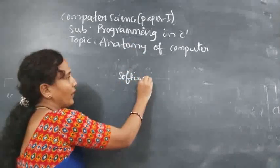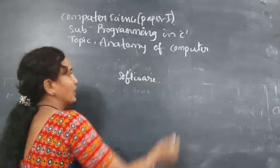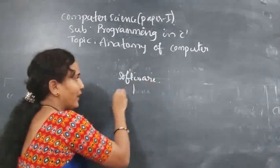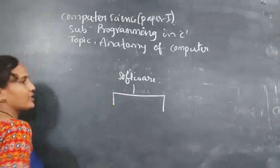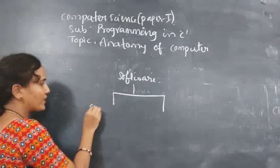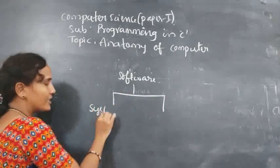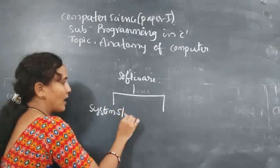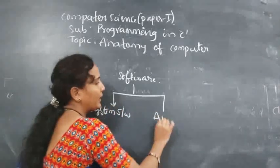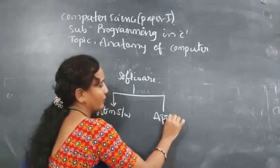Software is divided into two categories: one is system software and the second one is application software.